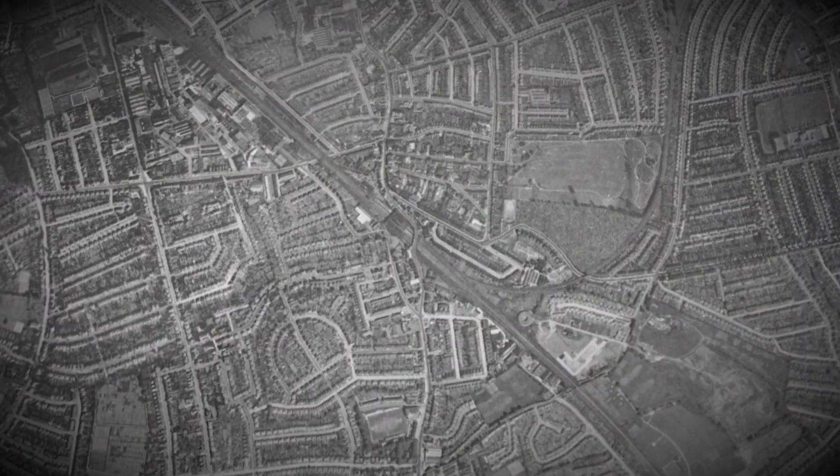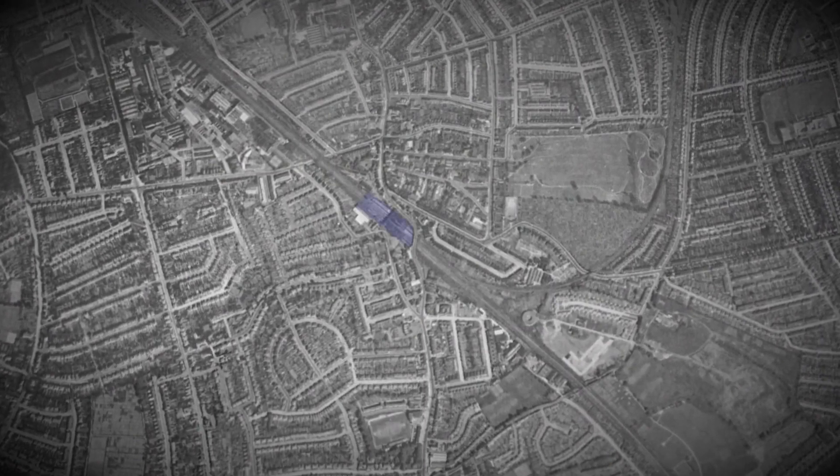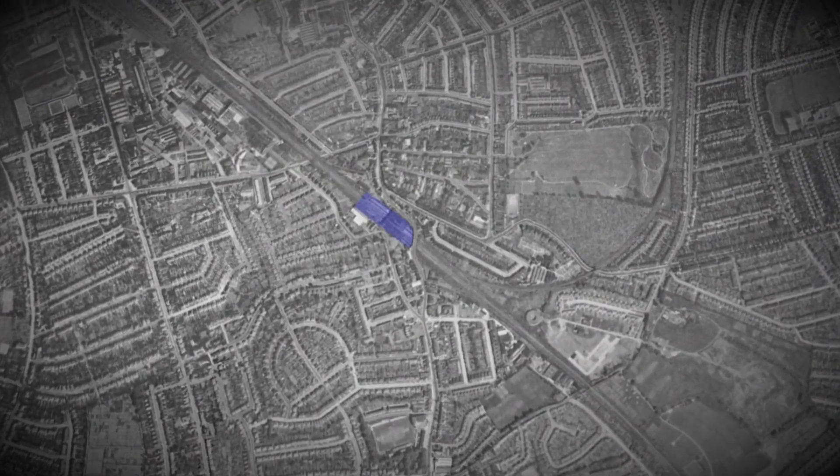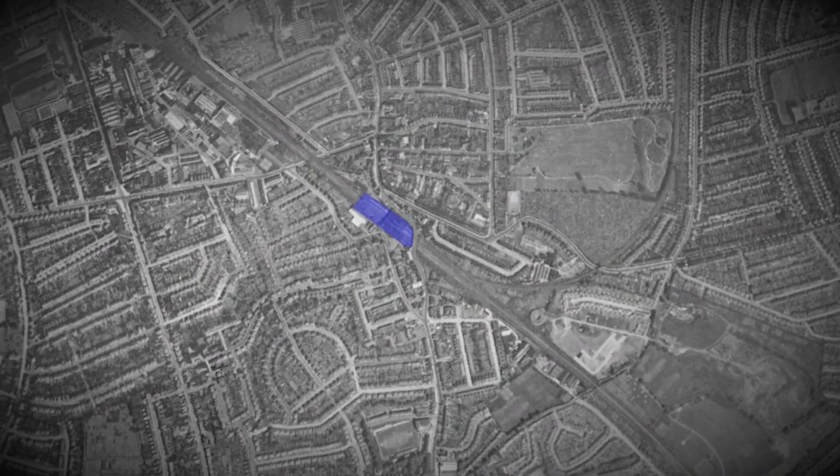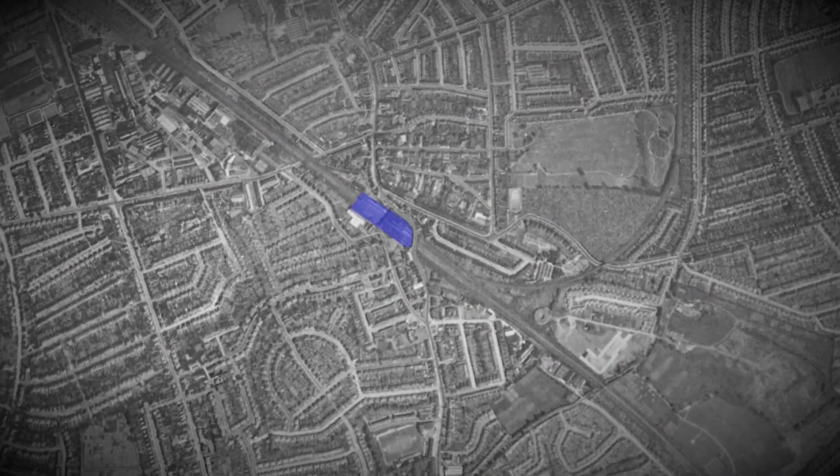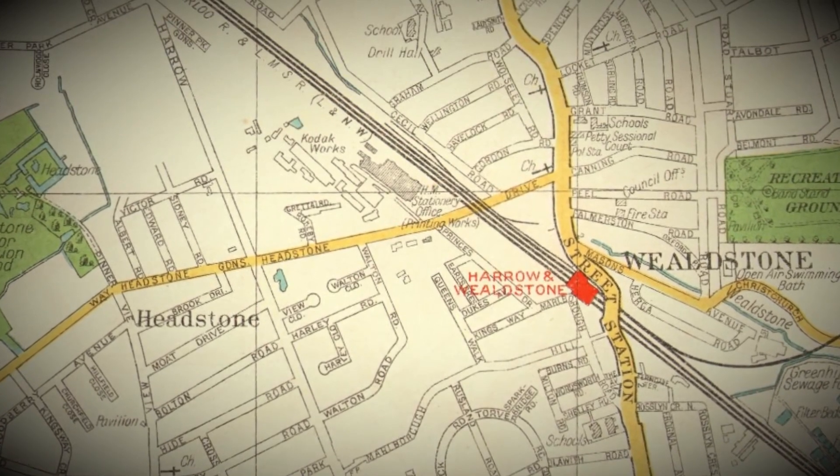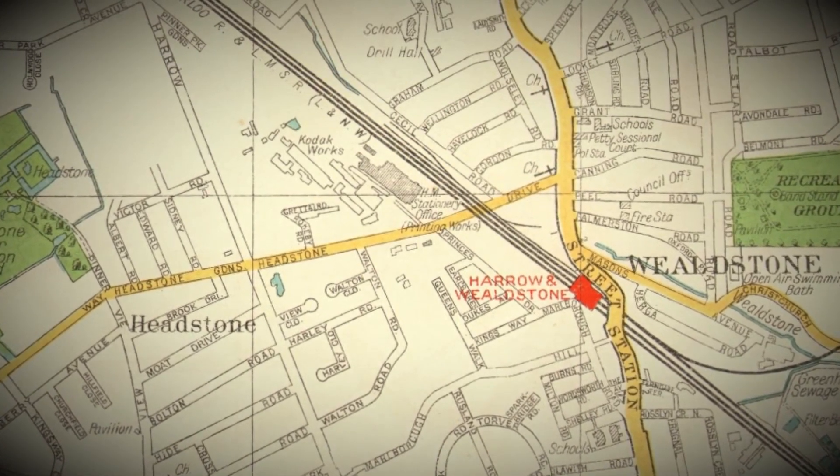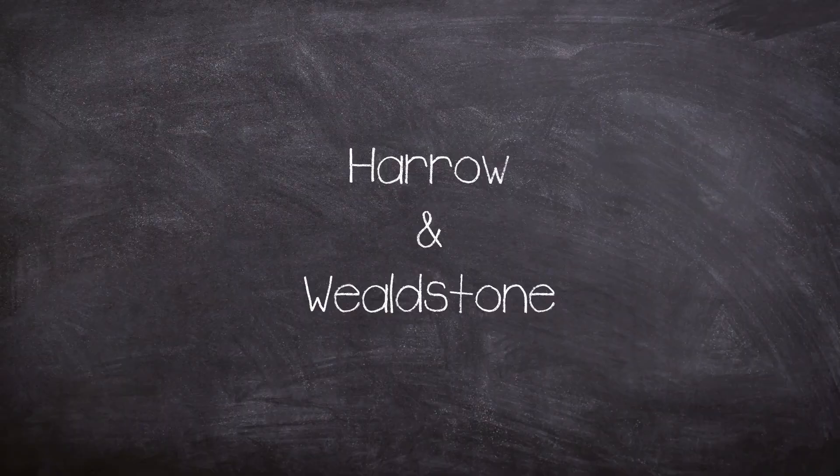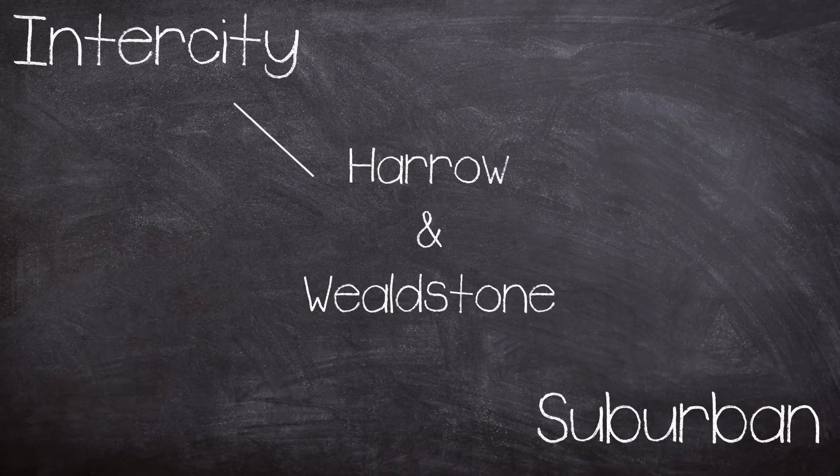Harrow and Wealdstone is a train station 11 miles and 30 chains from London, placed in modern day Harrow, London Borough. But in the 1950s it has yet to become absorbed by the UK's capital and as such is firmly within Middlesex. It is a busy interchange between intercity, suburban, and metro services.